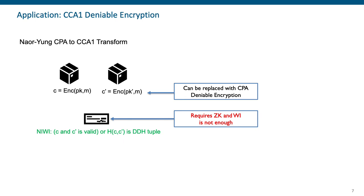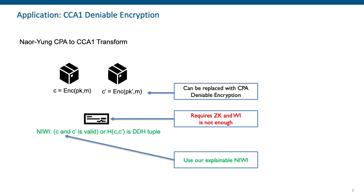Since we replace the zero knowledge proof with a witness indistinguishable proof, we can run our explainable non-interactive witness indistinguishable proof instead of the NIZK. At the end, if we replace the encryption schemes with the CPA deniable encryption scheme from Sahai and Waters and the NIWI proof with our explainable NIWI, we get a CCA1 deniable encryption scheme.